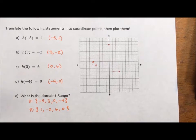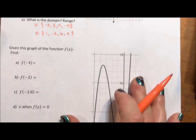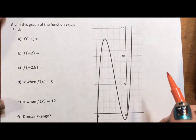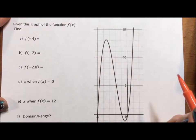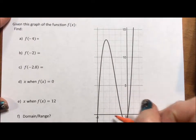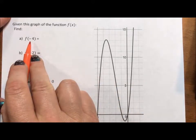Alright, for my second example, this one, I'm going to do this a little bit differently, where instead of writing the ordered pairs, I'm going to get the information from the graph. So f of negative 4. So if x is negative 4, what is y?